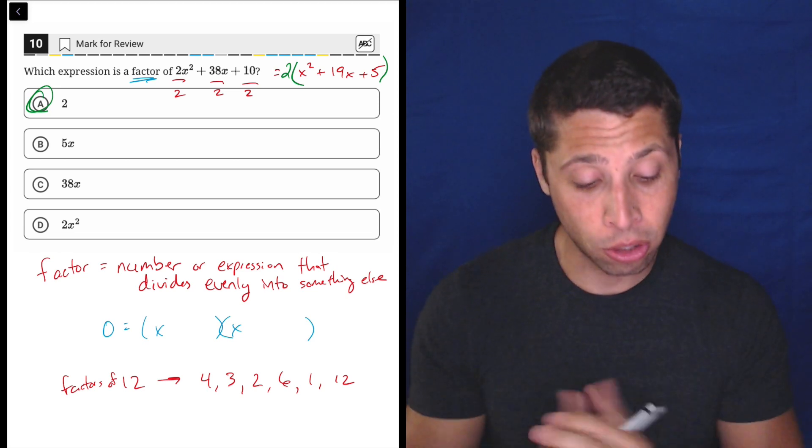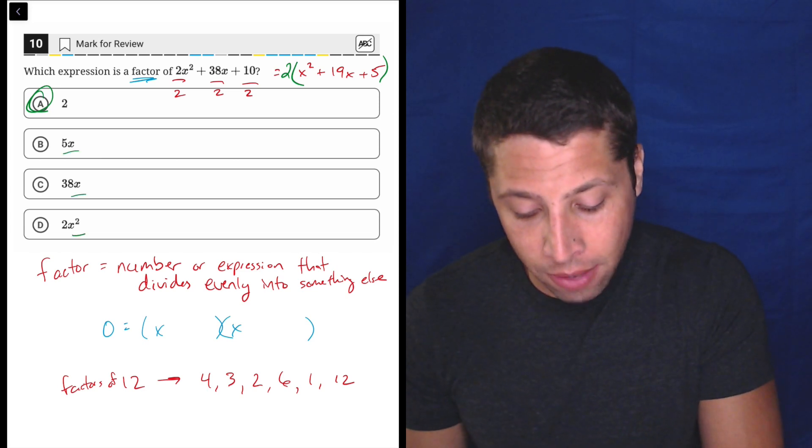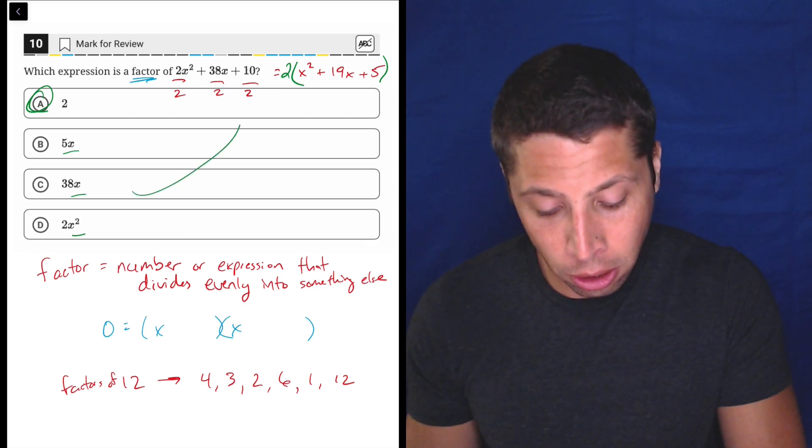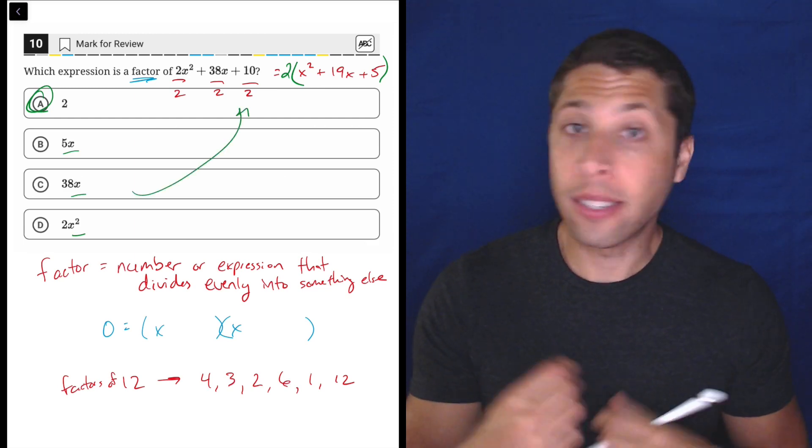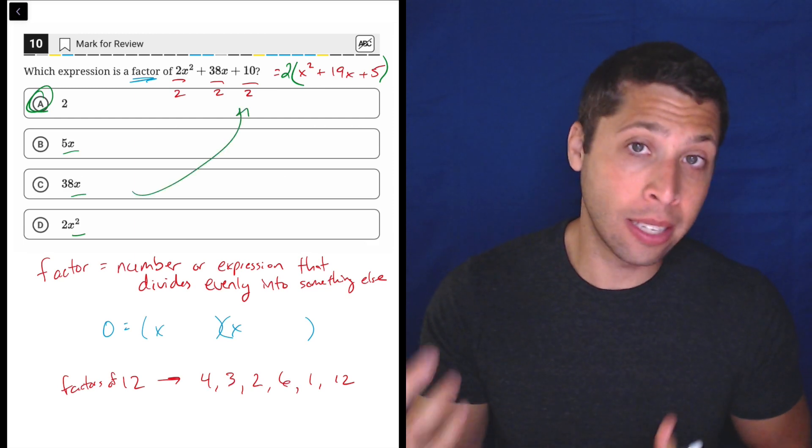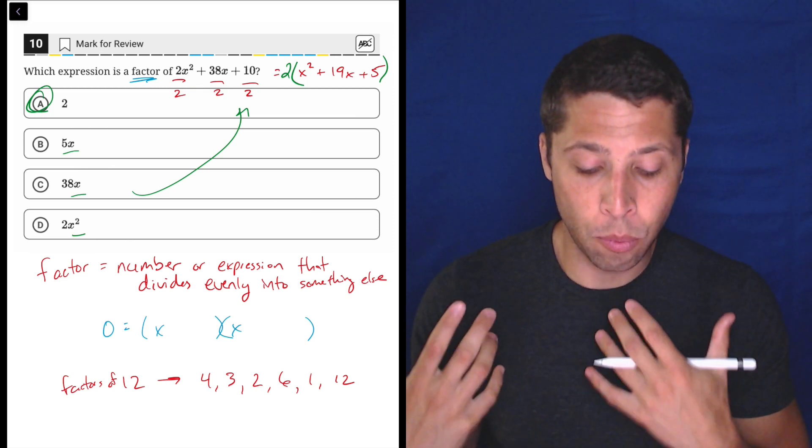Beyond this, we can't really factor. So notice we can't factor any of these things because that last term, the 10, doesn't have an x. So we can't divide x into that evenly. So it wouldn't work out nicely.